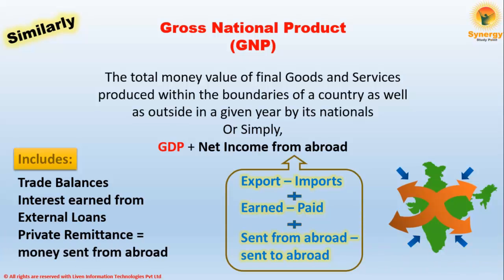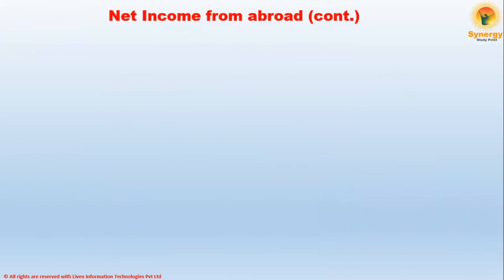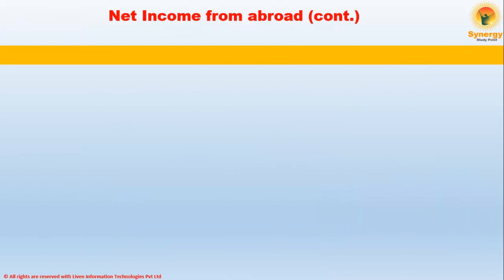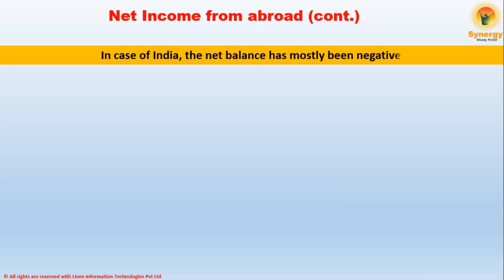Net income from abroad includes trade balances — that is, exports minus imports — interest earned and interest paid, and private remittances, that is, money sent from abroad minus money sent to abroad.